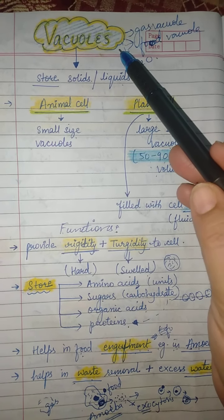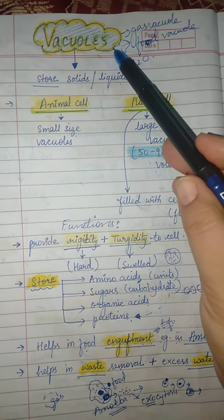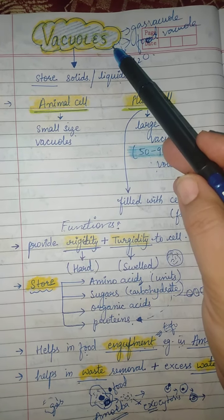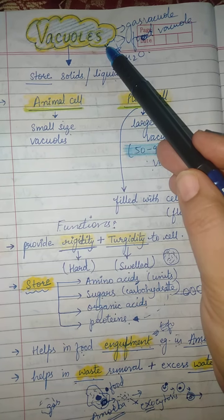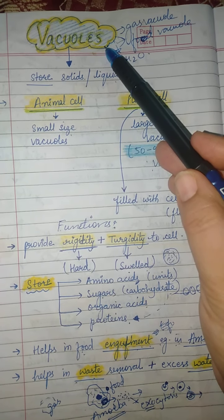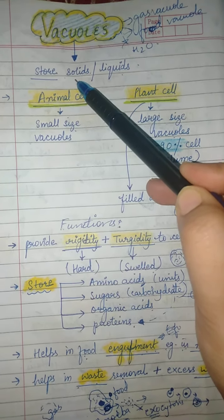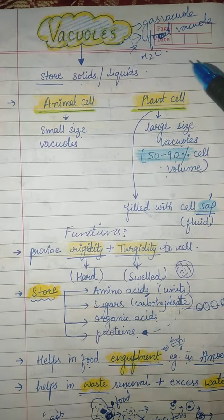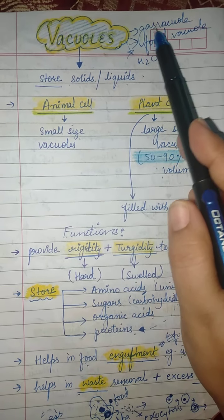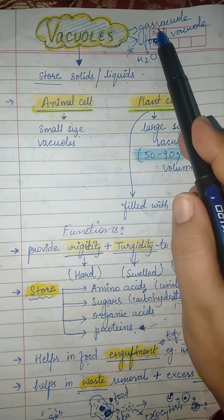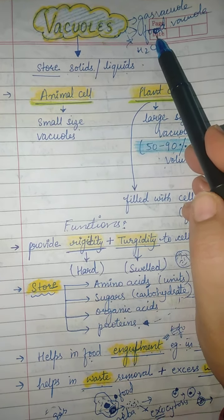Hello students, in today's lecture we will discuss the next cell organelle — cell vacuoles. In the previous lecture we studied about plastids and types of plastids. Vacuoles are another important cell organelle that helps in the storage of solids as well as liquids. These are of different types: gas vacuole, which helps in the storage of gas, and food vacuole, which helps in the storage or digestion of food.